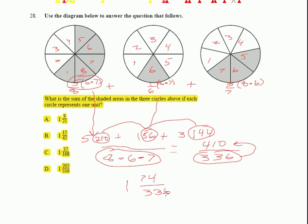Since 74 and 336 are both even numbers, I know I can divide them by two. And by dividing by two, I will ultimately arrive at the following: I'm going to get one with 37 over 168.